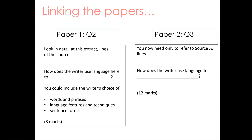In Paper 2, Question 3 looks very similar. They also ask you to refer to specific lines of one source and to say how the writer uses language, again with a specific focus. So it might be something like: how does the writer use language to describe a character — such as Sister Brendan in one of the papers we've covered. This is essentially the same question, but it's worth 12 marks.